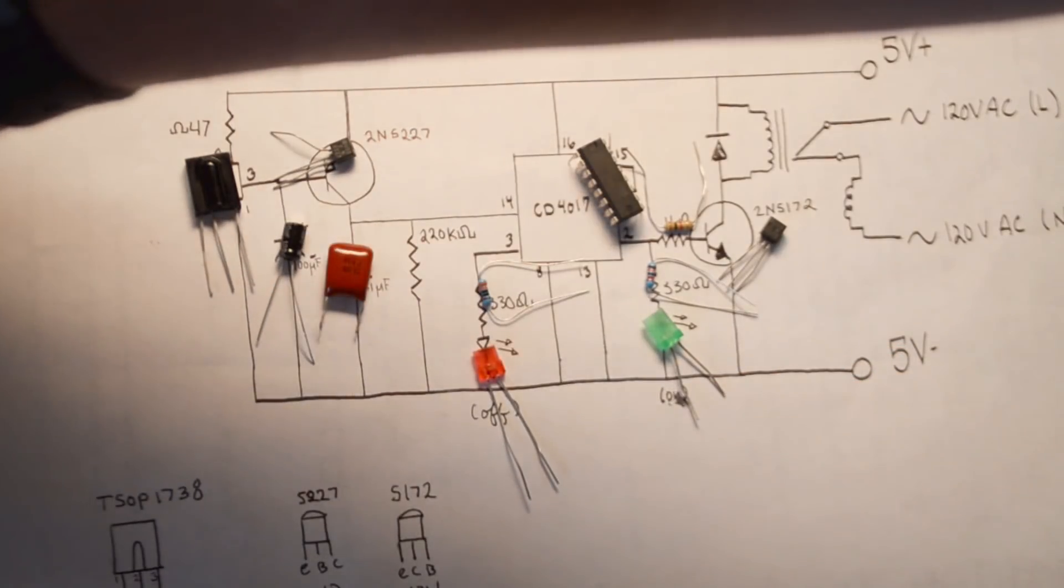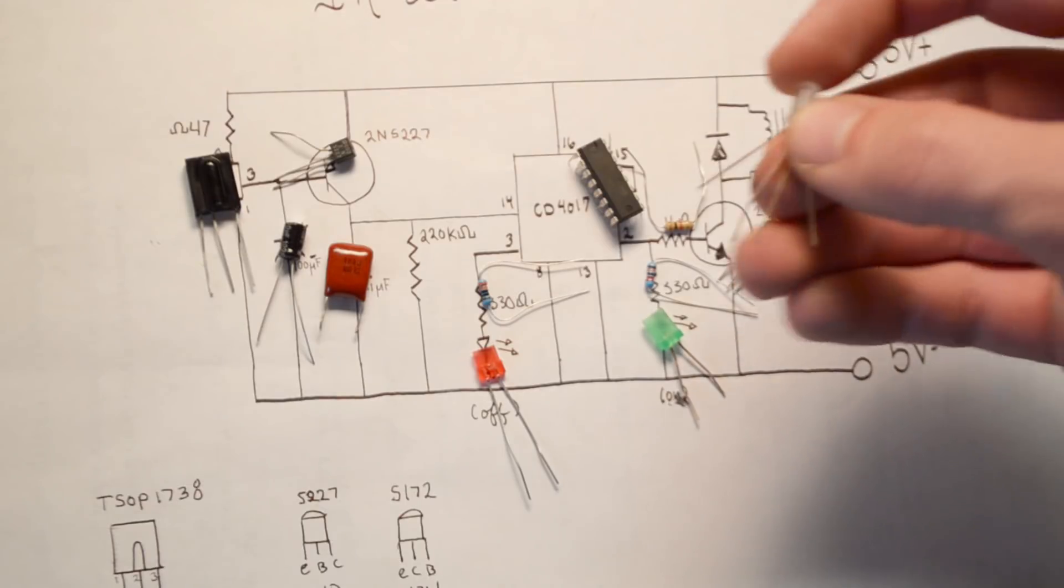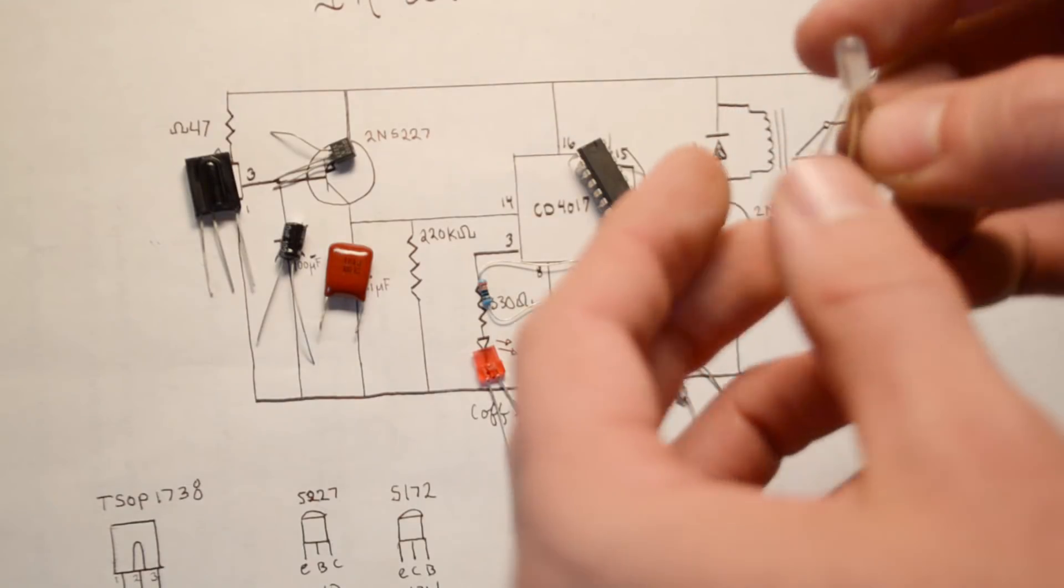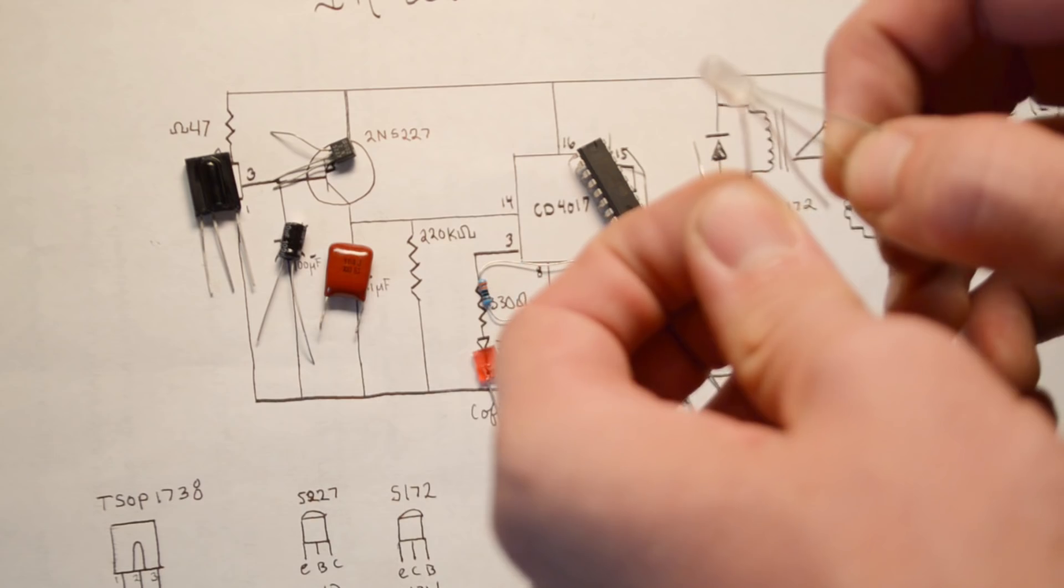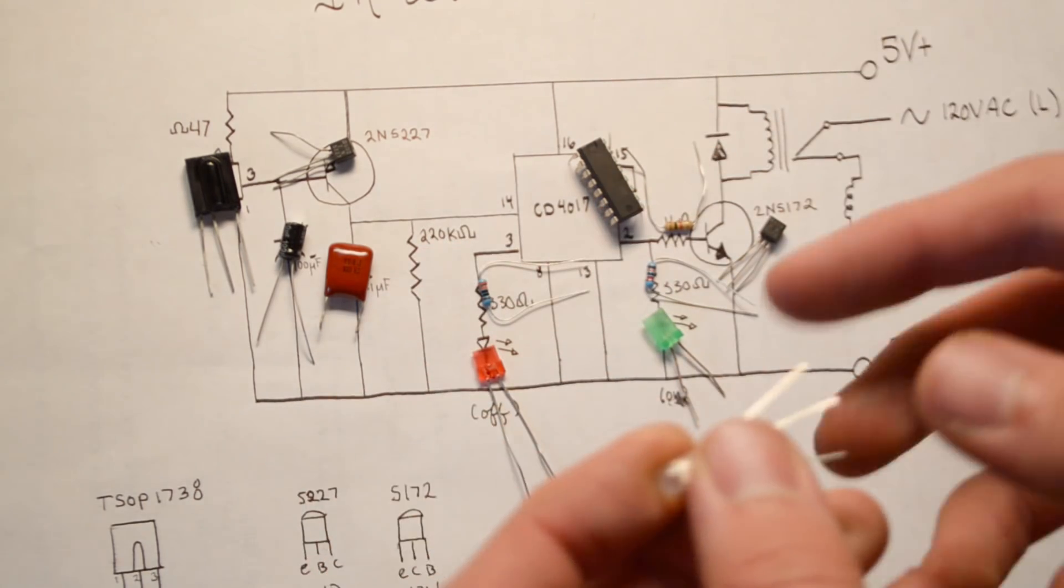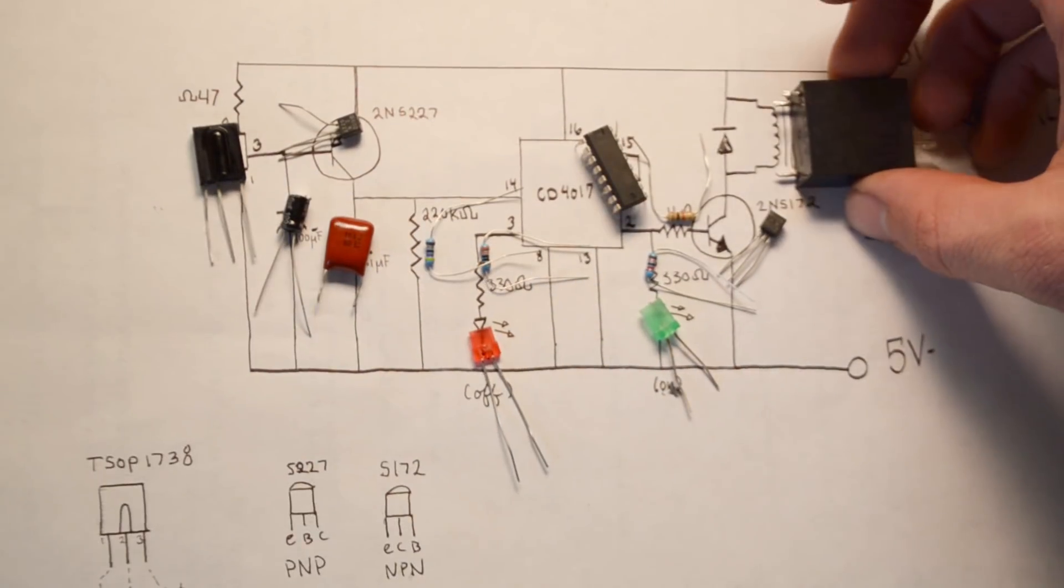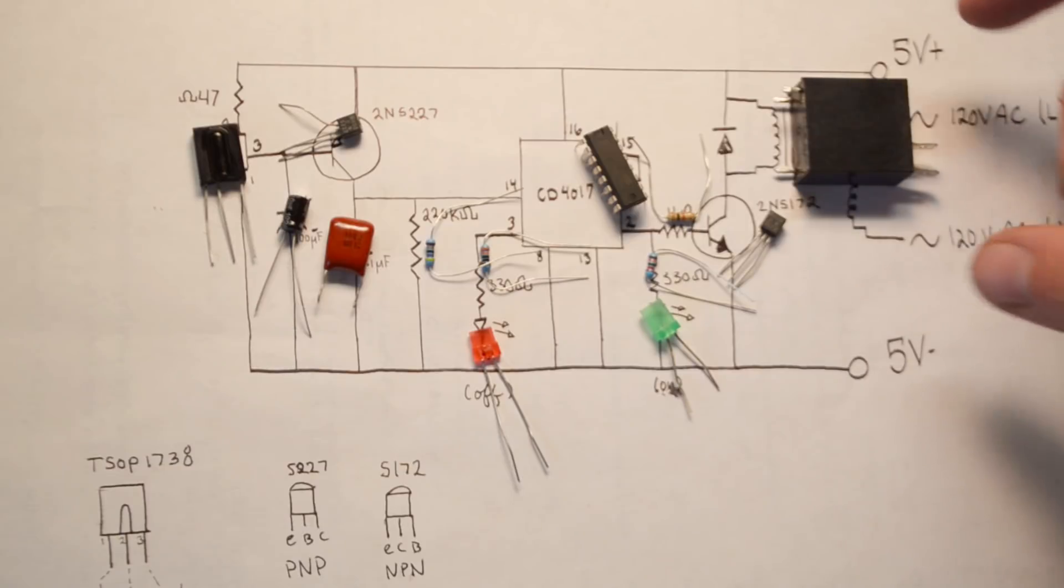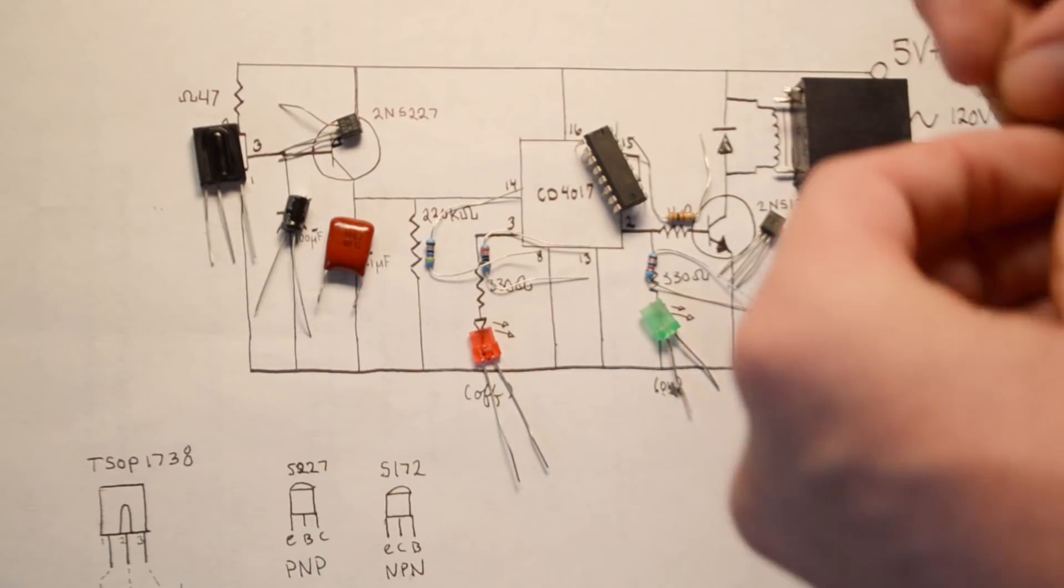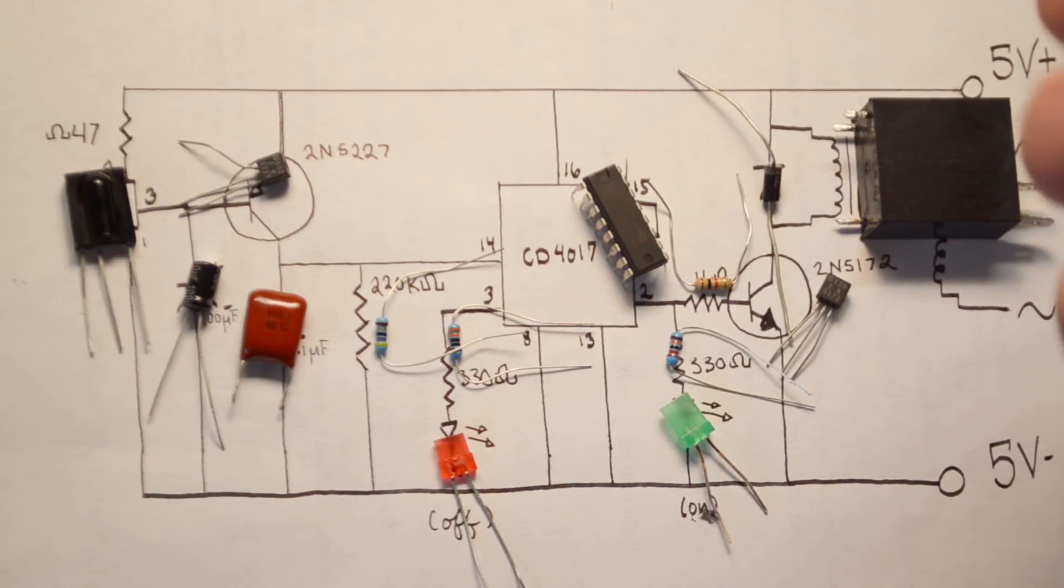As for these transistors, I'm pretty sure most transistors should work as long as this is a PNP and this is an NPN. Speaking of the NPN, we have a 2N5172 NPN transistor, a couple 330 ohm resistors, an LED to indicate that the circuit is on, and an LED to indicate that the circuit is off. Rather than these, you can just use one of these multi-pin LEDs that you can get multiple colors off of. A 220 kiloohm resistor and then a 5 volt relay.